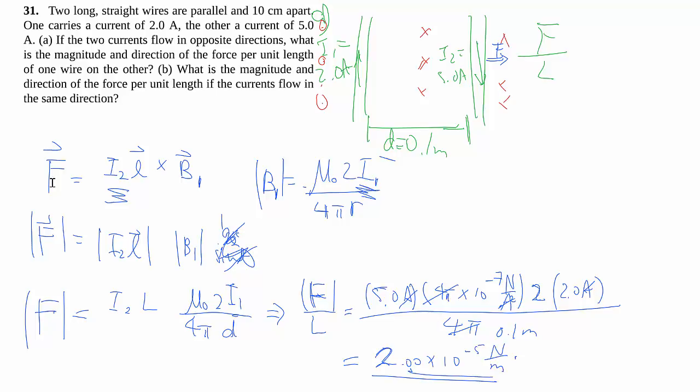Then to specify the direction, since they don't give us any x, y, z coordinates and don't tell us how these are oriented in space, all we can say is it's away from the other wire. In these cases, it's only really one of two choices: either away from the other wire or towards the other wire. So that's Part A.